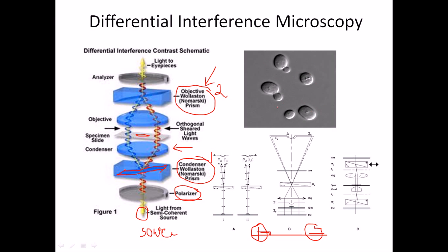But if we place a specimen — for instance, a cell culture of yeast Saccharomyces cerevisiae — what happens when the light beams pass through? The specimen deflects some amount of both light beams, slightly changing their phase transition. The diffraction changes, causing the beams to interfere with each other, generating different types of light beams. When the second Wollaston prism gathers these beams together, the analyzer can no longer block all of them.